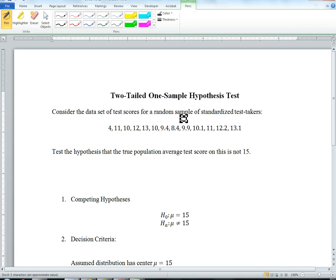Consider the data set of test scores for a random sample of standardized test takers. Here are the different scores that they get, and we want to test the hypothesis that the true population average test score on this is not 15.